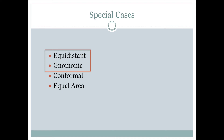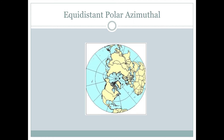Let's talk about these two special cases of map projections: equidistant and gnomonic. Equidistant means that all points on the map are the proper distance away from one given point on the map. In the example we're looking at here, that would be the North Pole. So if we measure the distance anywhere from the North Pole on this map, the distance would always be the true distance to that point.